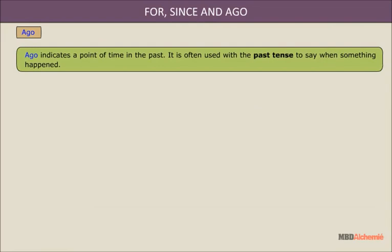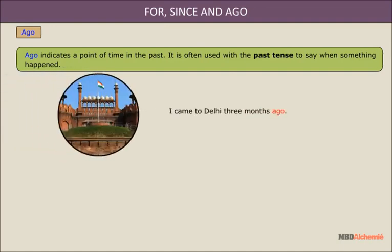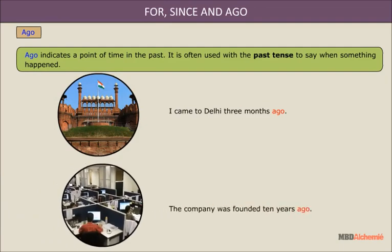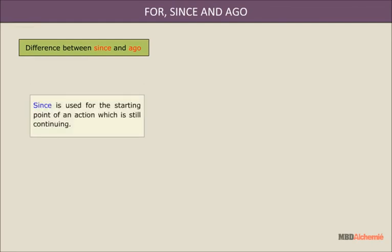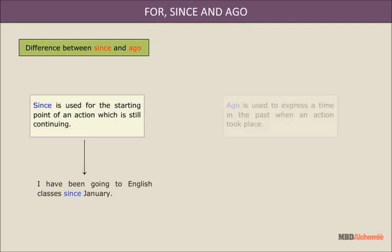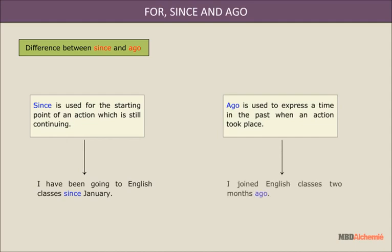Ago indicates a point of time in the past. It is often used with the past tense to say when something happened. For example: I came to Delhi three months ago. The company was founded ten years ago. Since is used for the starting point of an action which is still continuing, while ago is used to express a time in the past when an action took place.